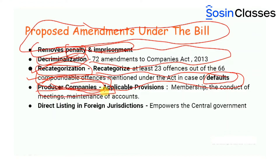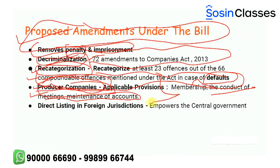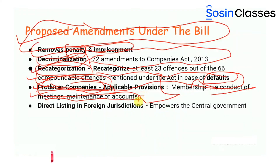Coming to producer companies, certain provisions from the Companies Act apply to producer companies. These provisions include membership, the conduct of meetings, and the maintenance of accounts. Under this bill, all these provisions are removed. Producer companies include companies which are engaged in production, marketing, and the sale of agriculture produce, and the sale of produce from cottage industries.